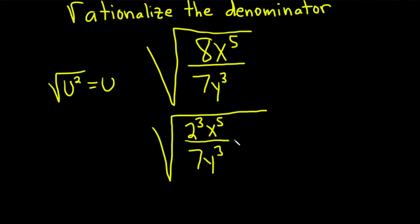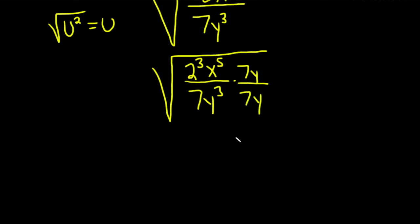So now we want to make the bottom squared, so I'll multiply by 7y over 7y. And the reason that works is the following: 7 times 7 is 7 squared.